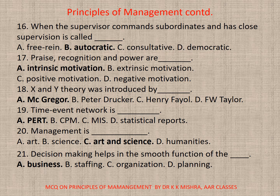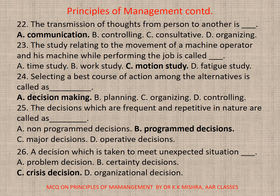Question 20: Management is — correct option is c) Art and science. Question 21: Decision making helps in the smooth functioning of — correct option is a) Business. Question 22: The transmission of thoughts from one person to another is — correct option is a) Communication.